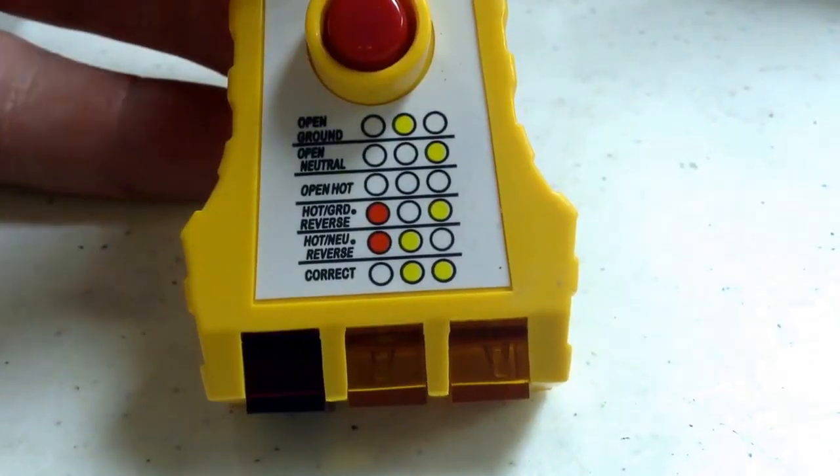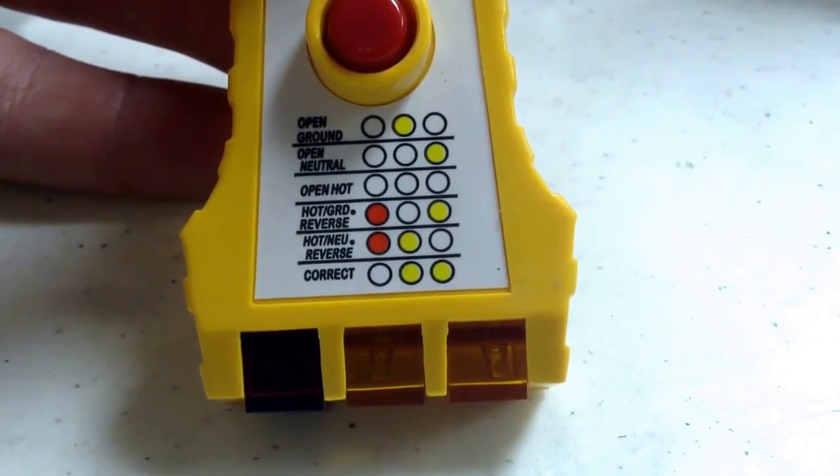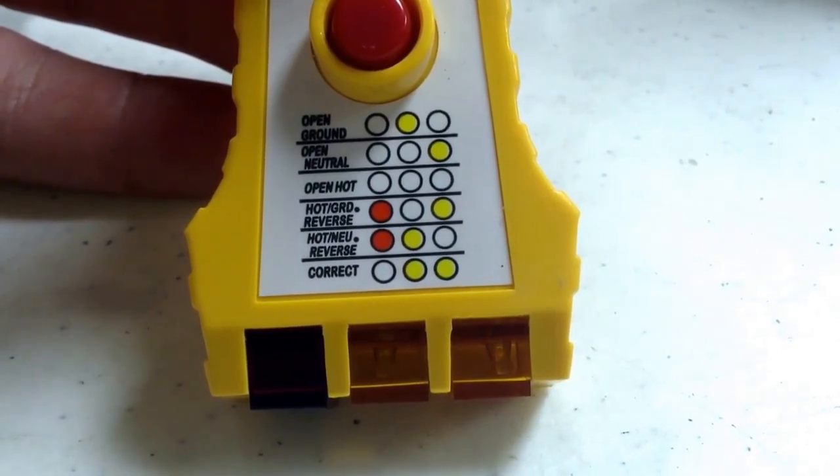Here you can see the different options of the lighting combinations. Again there's six different options: open ground, open neutral, open hot, hot and ground reversed, hot and neutral reversed, and correct. Just in case the sticker's worn off on your tester.